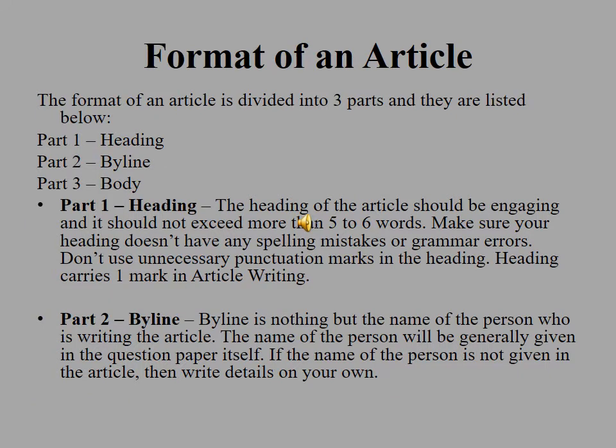Now let us see the format of an article. The format of an article is divided into three parts and they are listed below. Part 1 will include the heading. The heading of the article should be engaging and it should not exceed more than 5 to 6 words. Make sure your heading doesn't have any spelling mistakes or grammar errors. Don't use unnecessary punctuation marks in the heading. Heading carries one mark in article writing.